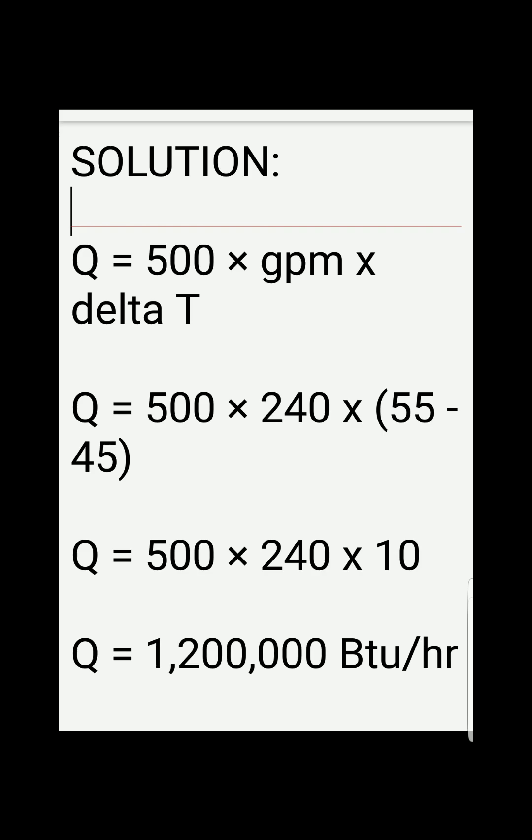We just need to substitute what we were given. For the GPM we have 240, and the delta T is the difference in temperature, which is 55 minus 45, or 10. Multiplying the three together, we get 1,200,000 BTU per hour.